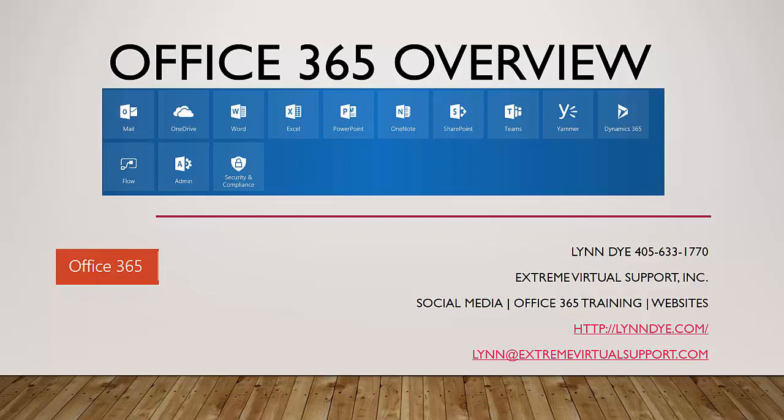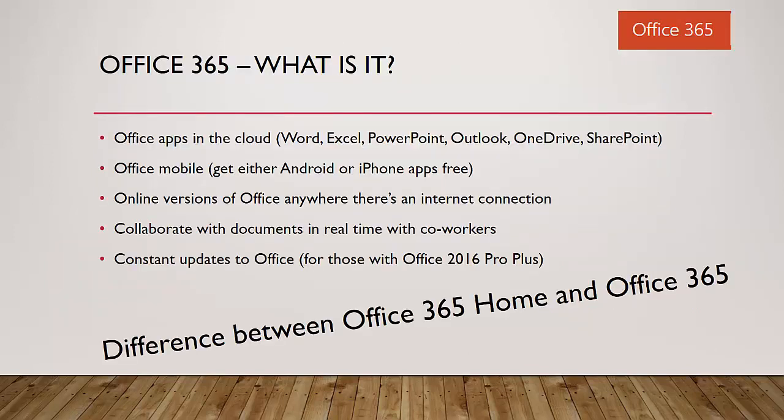The first thing I did was pull up Office 365 online and show them the apps — explained what an app is, which is what we used to call programs. You can see here on the screen the ones that they got with their Office 365 tenant. You can also get Office Mobile on your Android or iPhone for free, and then you can get online versions of Office anywhere you have an internet connection. You just sign into your account and you have all of these apps available.